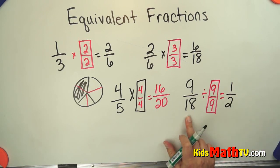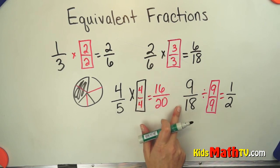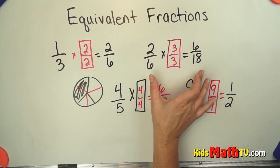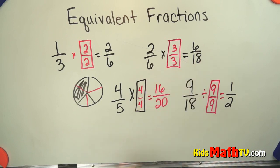So 9 eighteenths and 1 half are the same amount. And if you think about it 9 is half of 18. 9 eighteenths is equal to 1 half. They are equivalent fractions. 2 sixths and 6 eighteenths are equivalent fractions. They name the same amount.